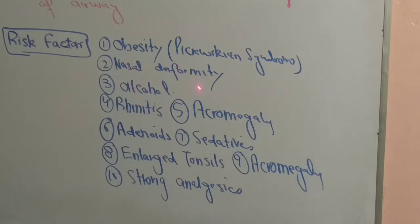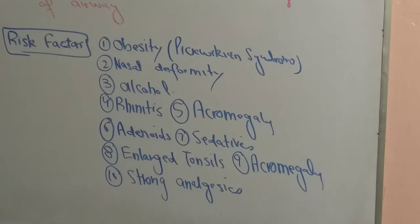Further risk factors include obesity, nasal deformity, alcoholism, rhinitis — inflammation of the nasal pathways — acromegaly, which causes hypertrophy of the tongue muscles, adenoids, enlarged tonsils, use of sedatives, which cause the deepest sleep and most hypotonic muscles, and strong analgesics, which are also a risk factor for the development of obstructive sleep apnea.